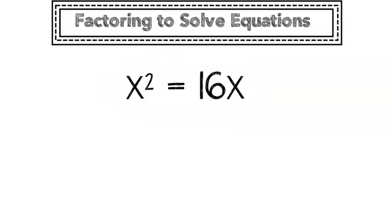So I'm going to take this 16x and I'm going to move it to the left-hand side, giving me x squared minus 16x is equal to 0. And now, I'm going to factor.